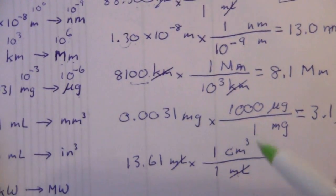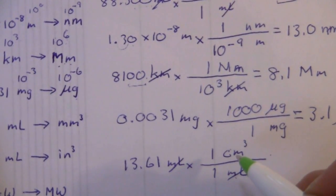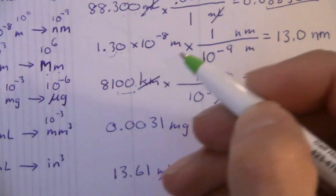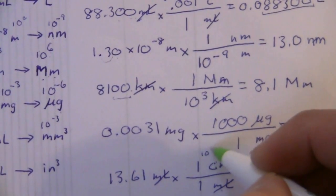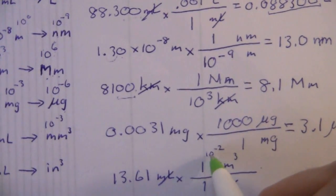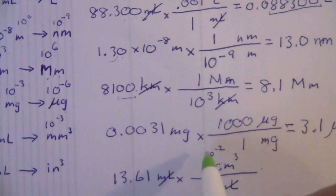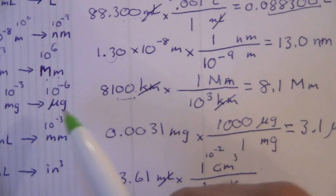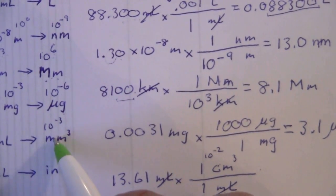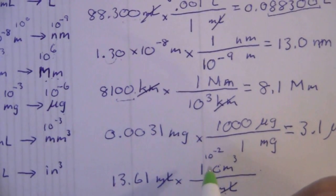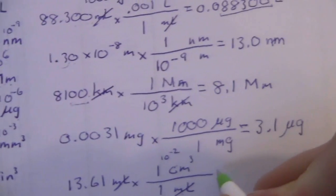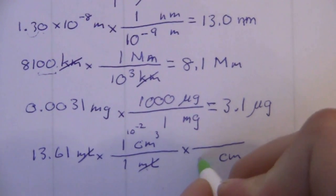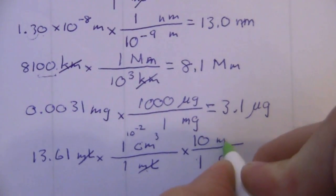Here we have cubic centimeters but we want cubic millimeters. How many millimeters are in a centimeter? Again, milli is 10 to the minus 3, centi is 10 to the minus 2. So there are 10—which one is smaller? Here's 10 to the minus 2, so that's a bigger number than 10 to the minus 3, so that means the millimeter is smaller and there are 10 millimeters in one centimeter.